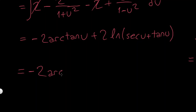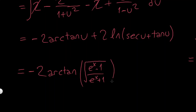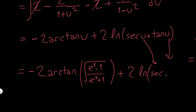So putting it all together, u was equal to (e^x minus 1) over (e^x plus 1). I substitute that back for u in the arctangent term and in the secant-plus-tangent term, and that gives the final answer.